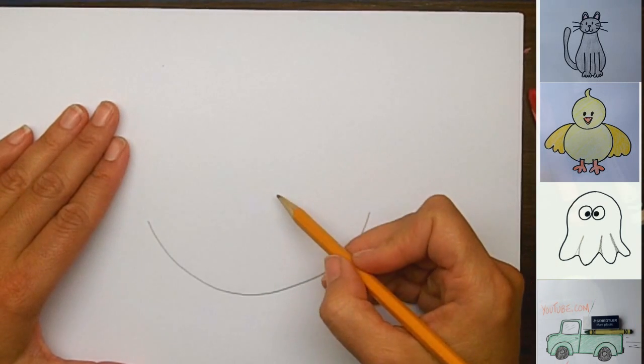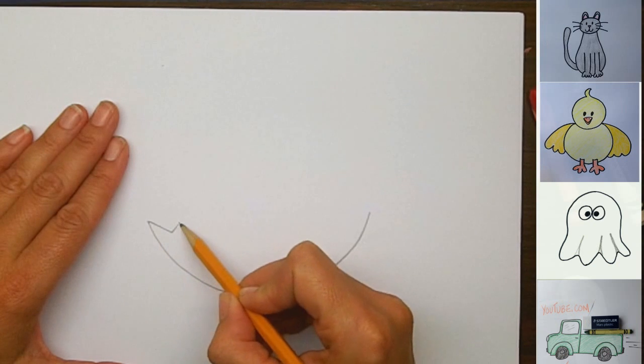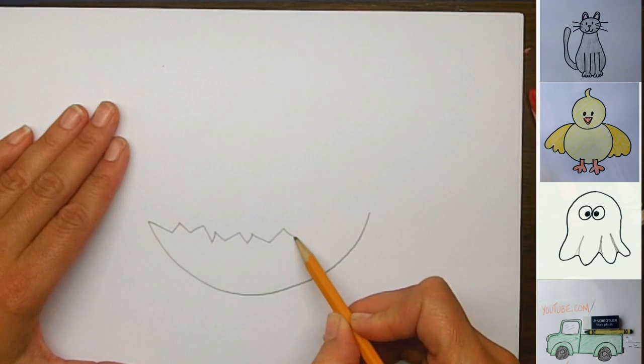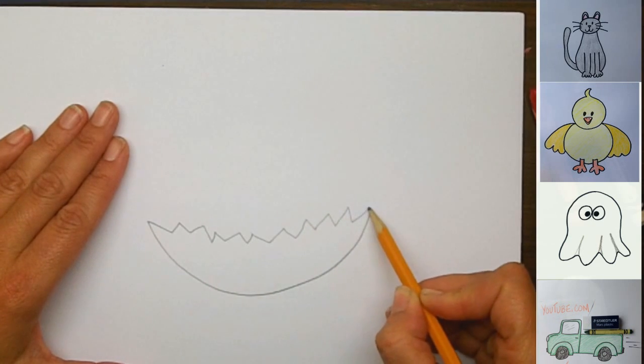And then we're going to draw the front edge of the cracked shell. So he's just hatched out of here, so the shell is going to have all kinds of jagged edges, making their way across, until we get to the other side.